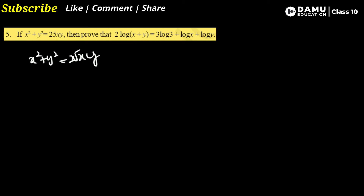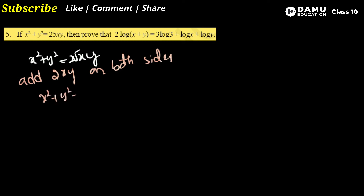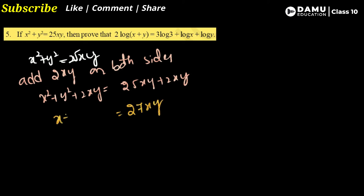Adding 2xy on both sides: x² + y² + 2xy = 25xy + 2xy. The left side becomes (x + y)² and the right side becomes 27xy.